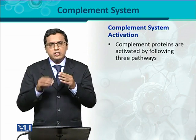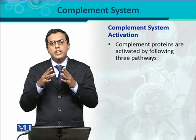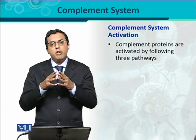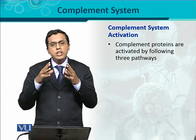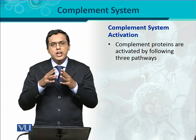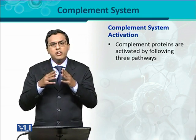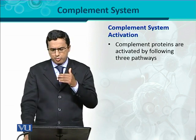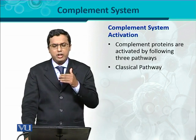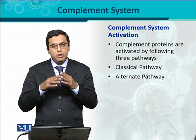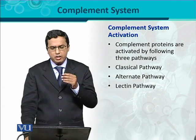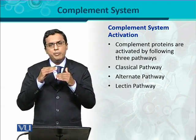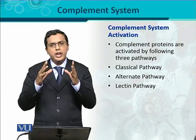Complement proteins are present in inactive form, so whenever activation is needed, it must go through a complement activation process. There are three important pathways for complement activation: the first is the classical pathway, the second is the alternate pathway, and the third important one is the lectin pathway. These three different pathways activate the complement proteins that are in inactive form.